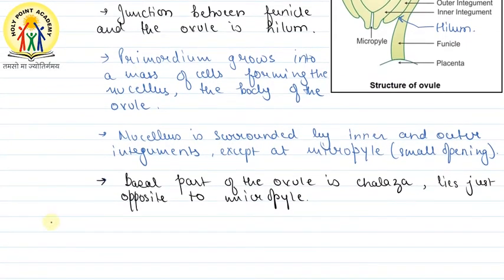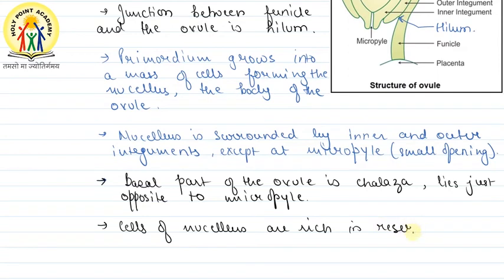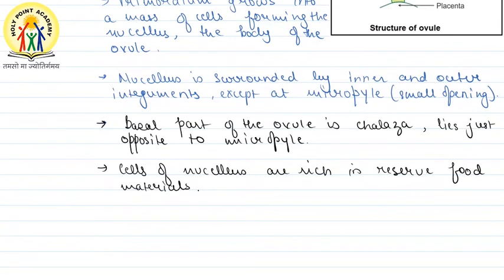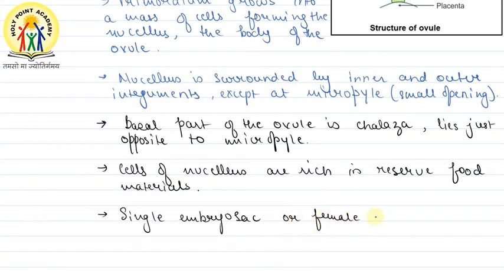The cells of the nucellus are rich in reserve food material. This reserve food material helps provide nutrition to the developing embryo sac. There is generally a single embryo sac, which is also known as the female gametophyte, located in the nucellus.